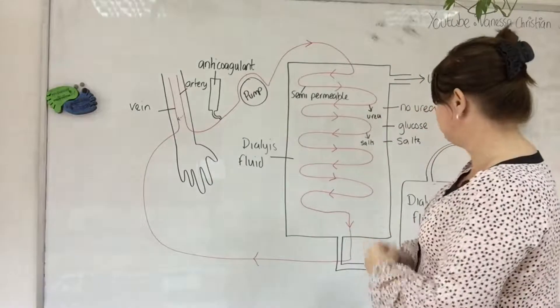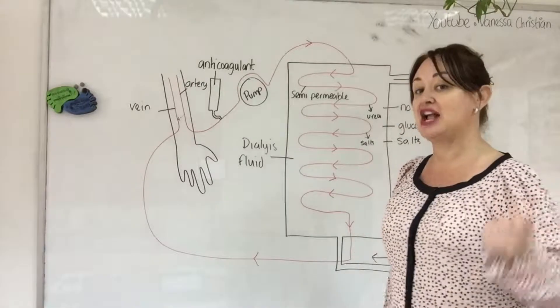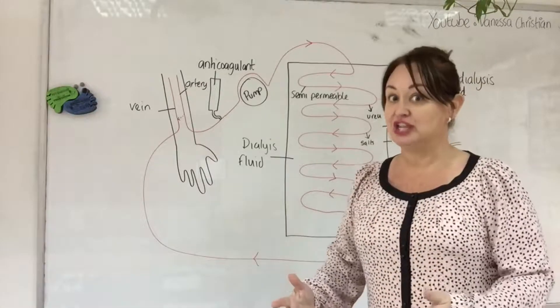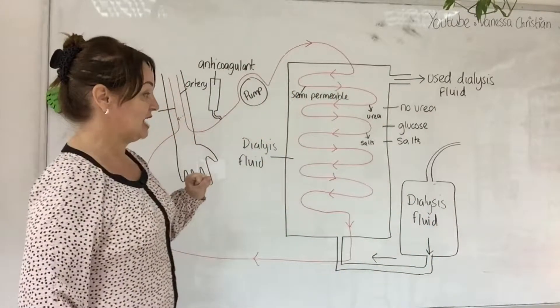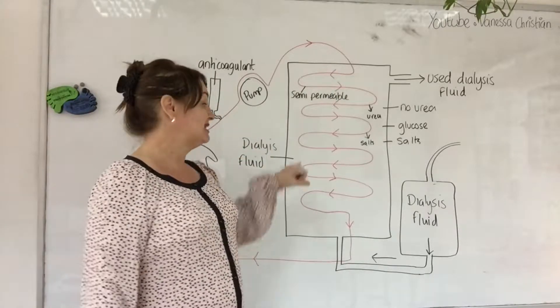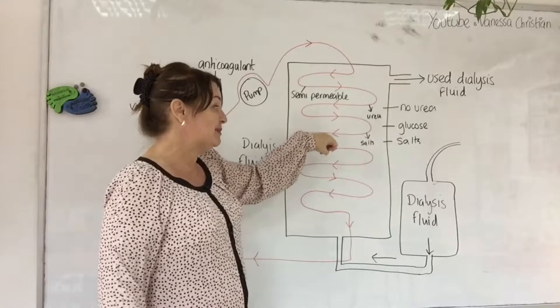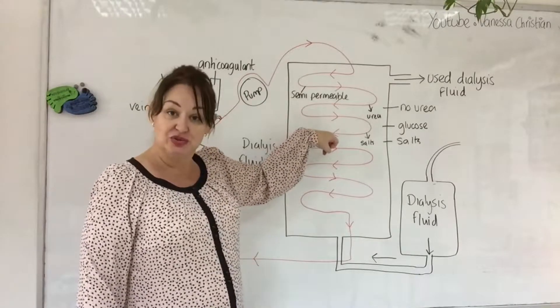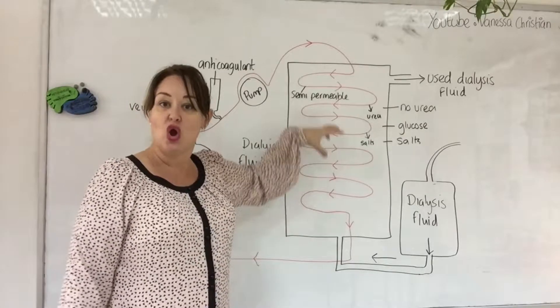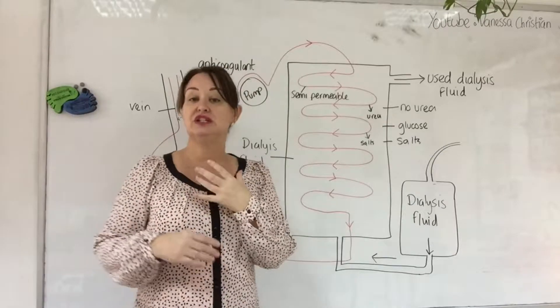This dialysis fluid needs to be refreshed and changed because we're relying on diffusion. Once those substances diffuse into the dialysis fluid, we need to change that. Let's think which substances would diffuse out. We don't want to lose glucose from our blood. The best way to keep glucose inside this tubing, because glucose is a monosaccharide, it's very small and very soluble, is to put glucose in the dialysis fluid. That way there'll be no net movement of the glucose out.